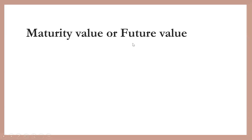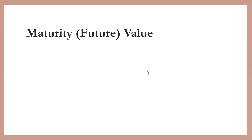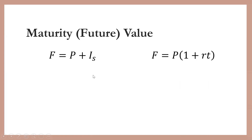Now, let's talk about the maturity value or future value of simple interest. The maturity value is the amount that the lender receives from the borrower on the maturity date. The formula for maturity value is F equals P plus IS, where we add the simple interest to the principal. Another formula is F equals P times the quantity one plus the product of rate and time.